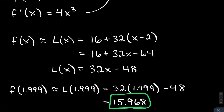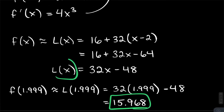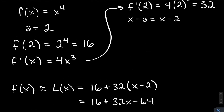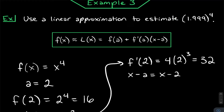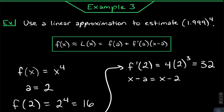And that right there is your answer. We've used this tangent line centered at x equals 2 to find the y value of the function at a nearby value of x — 1.999. That was it for linearization.